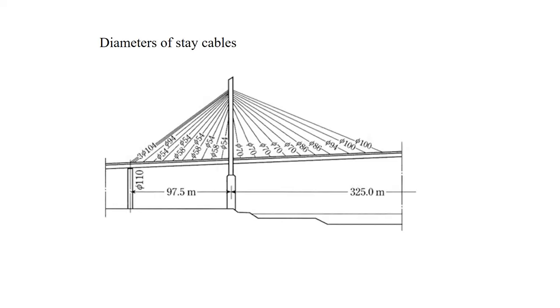Diameters of the stay cables depend on the position. Look at the cable diameters of this bridge. The anchor stay is the largest, and the center stay is also large. Other stays become smaller towards the tower.